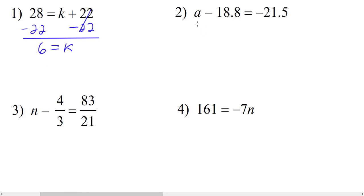Looking at number two, we have a minus 18.8 equals negative 21.5. In order to isolate a, we need to get rid of this negative 18.8, so we're going to add 18.8 to both sides.